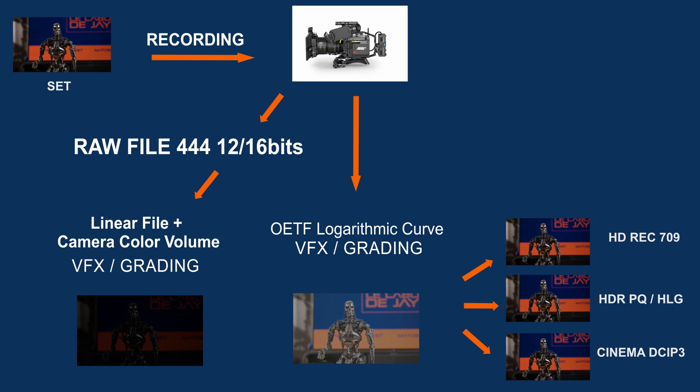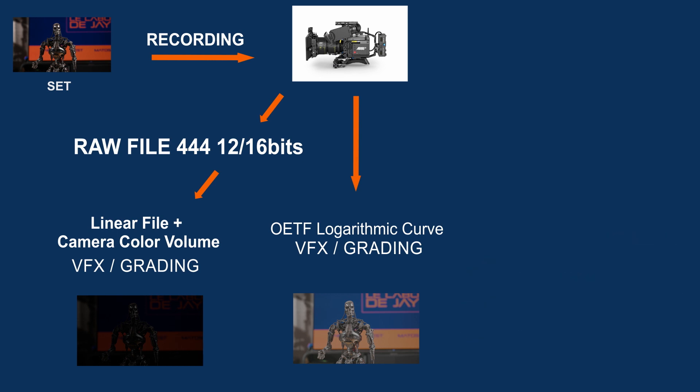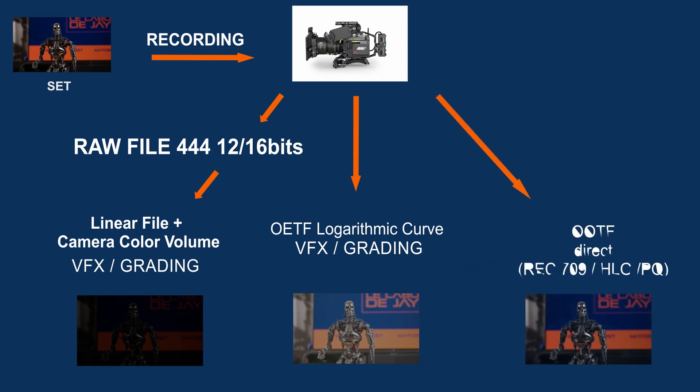The third way is to apply the whole OETF process during the image's shooting. For example, when shooting at home with an HD camera, you're going to capture your image in HD SDR — Standard Dynamic Range — displayed directly in Rec.709. The curve will be burned into your image and you can't go back. You don't have enough dynamic range to output a DCI-P3 or BT.2020 image — the Rec.709 curve is engraved in your image.